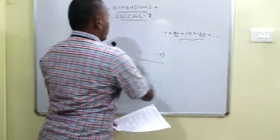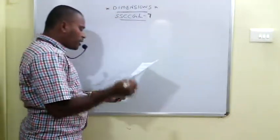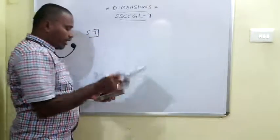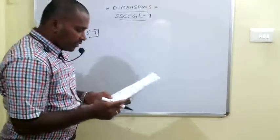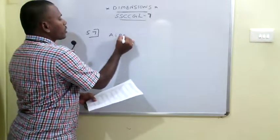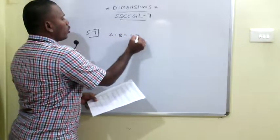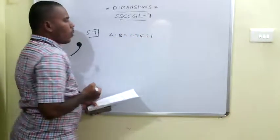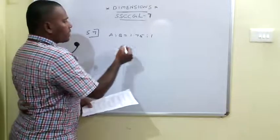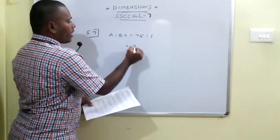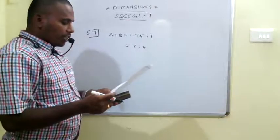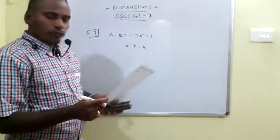The 57th problem: A runs 1.75 times as fast as B, so their speed ratio is 1.75 : 1, which simplifies to 175/100 = 7/4. So their speeds are in the ratio 7 : 4.